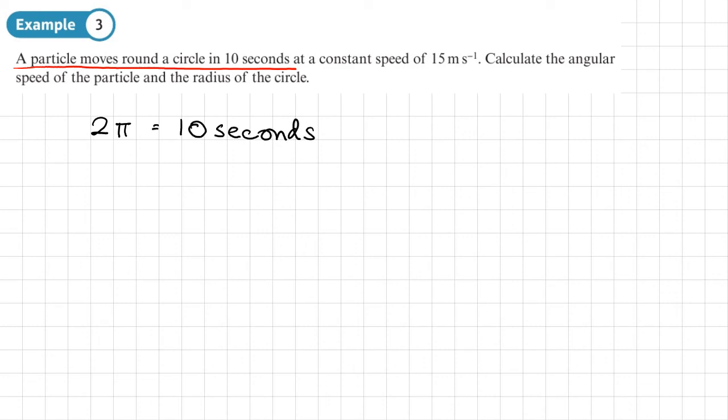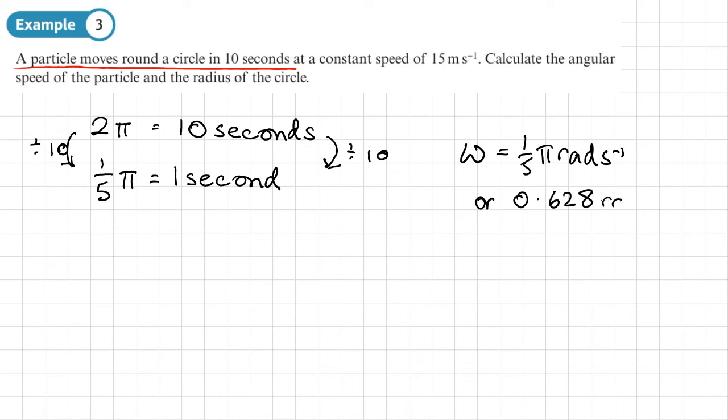We need to know the angle per second to work out the angular speed, so we divide both sides by 10. And then we'll get 1 5th pi in 1 second. So that's our angular velocity: 1 5th pi radians per second. And if we convert that to a decimal to three significant figures, that will be 0.628 radians per second.